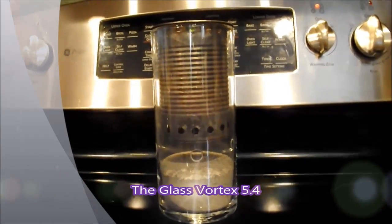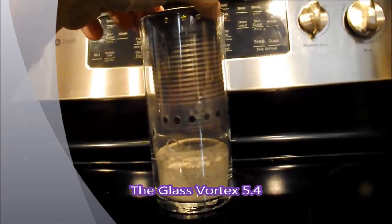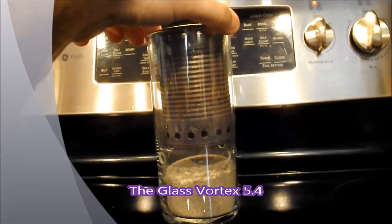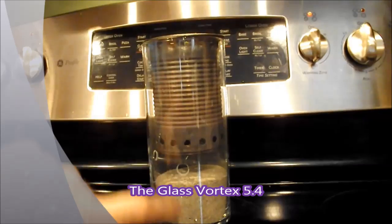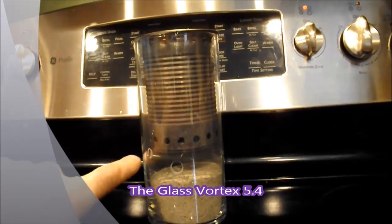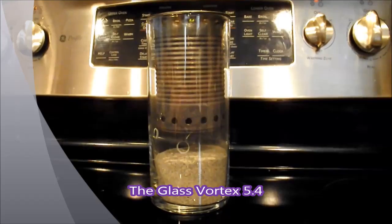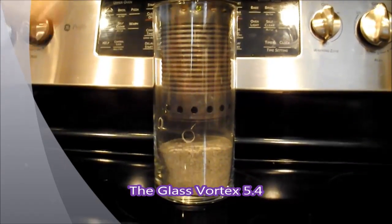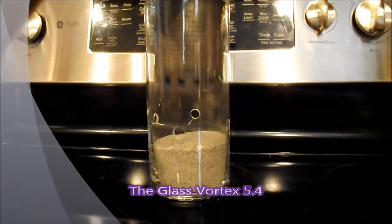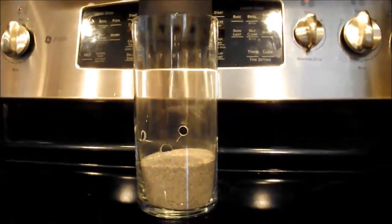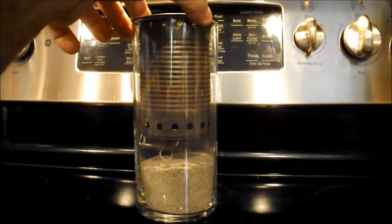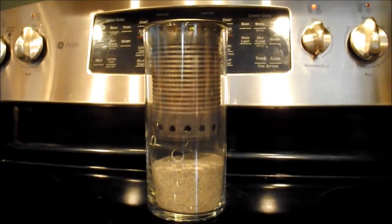Introducing the glass Vortex 5.4. As you can see, the outer can of this gas stove has been made out of a glass vase that was graciously donated by my wife, and I've drilled four fresh air intake holes around the outside.